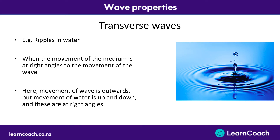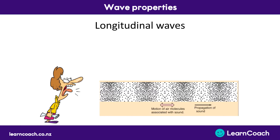To figure out if something is a transverse wave, think about the direction of the wave — in this case outwards — and think about the direction of the medium movement, which is up and down, vertical. If these are at right angles, then it's a transverse wave.